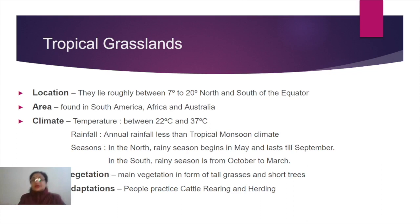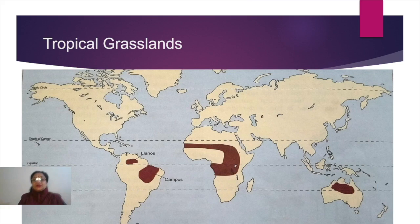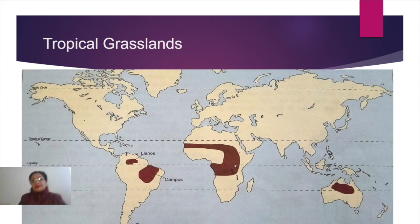In Africa, many countries have this natural region. Looking at the map, these include Sudan, Senegal, Cameroon, Ghana, Guinea, Mali, Niger, Togo, Kenya, Tanzania, Angola, Uganda, Zaire, Zambia, Zimbabwe, Malawi, and Mozambique. All these countries have some part covered by tropical grasslands, making it a vast area across Africa.